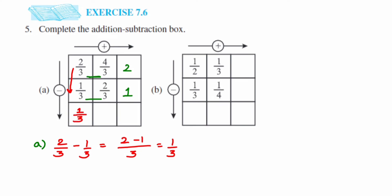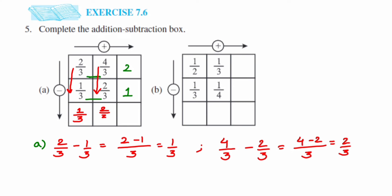Next subtraction: 4/3 minus 2/3. Again, like fractions — keep the denominator as 3 and subtract the numerators: 4 minus 2 equals 2. So the answer is 2/3. That completes the first box.